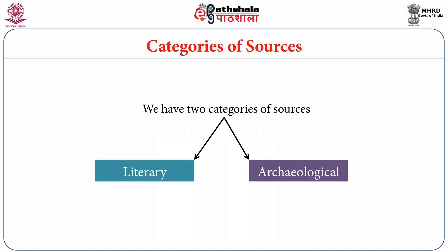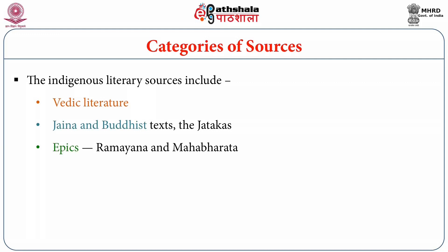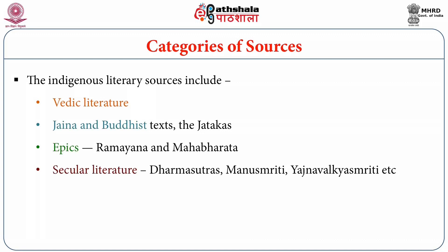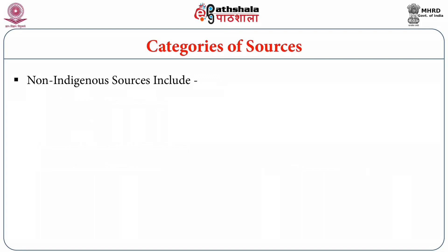We have two categories of sources: literary and archaeological ones. Literary sources fall into two sub-categories: indigenous and non-indigenous. The indigenous literary sources include Vedic literature, Jaina and Buddhist texts, the Jatakas, Epics — Ramayana and Mahabharata — secular literature, Dharmasastras, Arthashastra of Kautilya, Puranas, classical Sanskrit literature, and creative literature such as Dasakumaracharita, Kiratarjuniyam, and Mricchakatika.